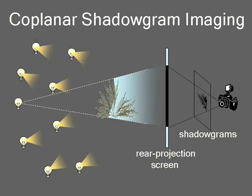The key observation here is that the relative transformation between the screen, or the image plane, and the object remains fixed as the light source is moved. We use the term shadowgrams for these shadows, and the term coplanar shadowgram imaging for the system.